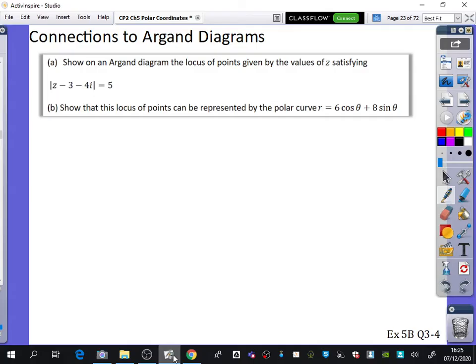So part A of the question just says, show on an Argand diagram the locus of points given by the values of z satisfying this. So I'm hoping you've remembered this. What would this be representing?